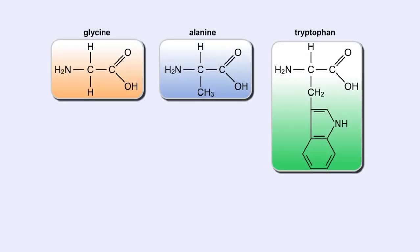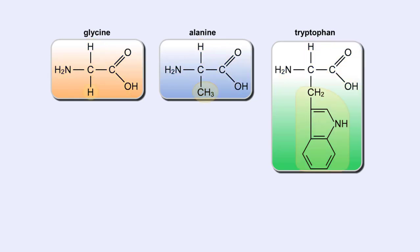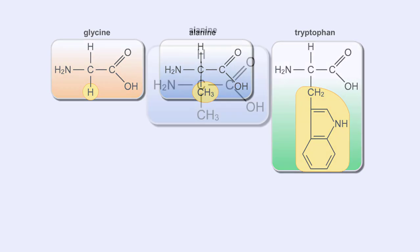Here are the molecular formulas of three different amino acids. All amino acids share this backbone. The main difference between every amino acid is the side groups seen here, and these side groups give each of the amino acids their different characteristics.